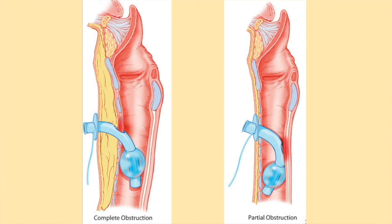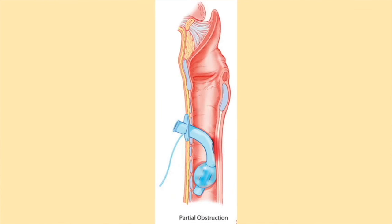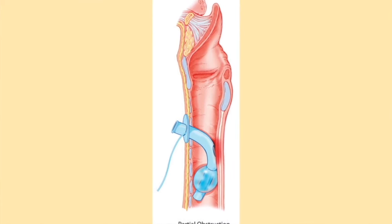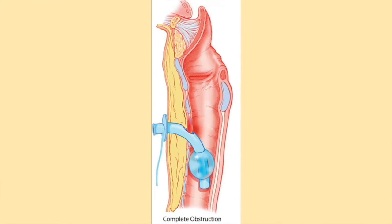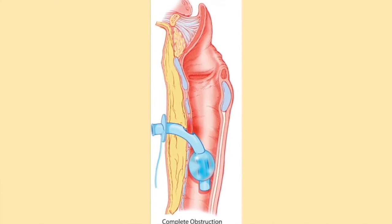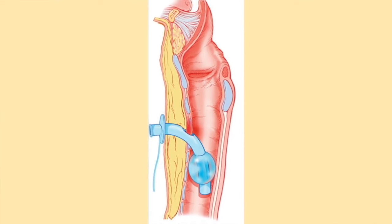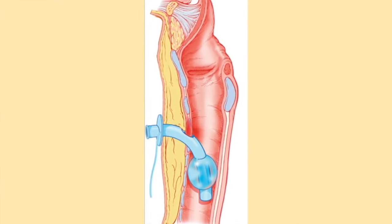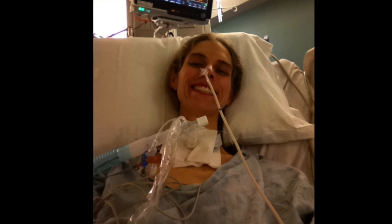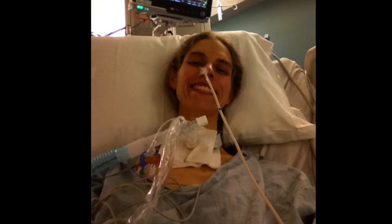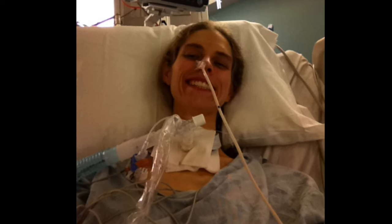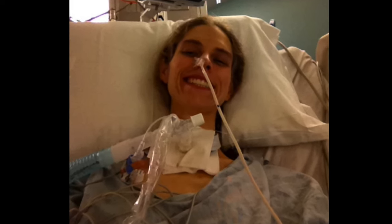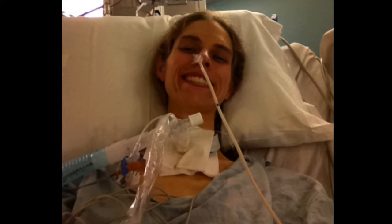Fenestrated tracheostomy tubes may not be properly positioned in the patient's airway. The fenestrations may come in contact with the tracheal wall, which can increase the risk of granulation tissue and compromise the airway. Granulation tissue has also been reported to have grown through the fenestrations, requiring emergency intervention to restore the airway. A fenestrated tracheostomy tube should not be used following surgery to create the tracheostomy — a non-fenestrated tracheostomy tube should be used until the tracheostomy site has healed.